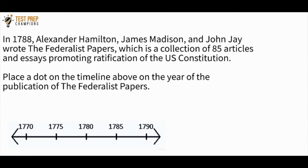In 1788, Alexander Hamilton, James Madison, and John Jay wrote the Federalist Papers, a collection of 85 articles and essays promoting ratification of the U.S. Constitution. Place a dot on the timeline on the year of the publication of the Federalist Papers. This took place in 1788, so we need to put the dot between 1785 and 1790 — somewhere around there is where the dot would go.